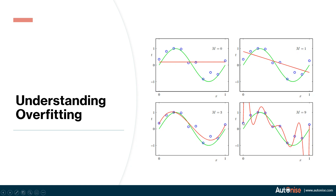So which should be the ideal answer — m=9 where the loss is exactly 0, or m=3 which is very close to the actual green curve? Most of you would say m=3, some would say m=9. The actual answer is that all of these graphs are possibly correct. If we did not know the green curve and were just given the blue data points, all of these can be the correct solution. But most of the time, the m=3 curve would be the closest one.